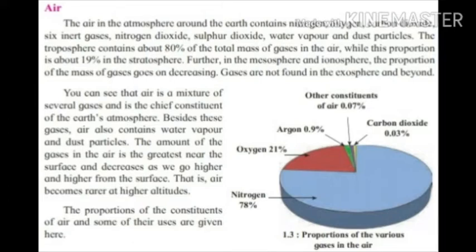Air is a mixture of several gases and is the chief constituent of the earth's atmosphere. Besides these gases, air also contains water vapor and dust particles. The amount of gases in the air is greatest near the surface and decreases as we go higher — that is, air becomes rarer at higher altitudes.